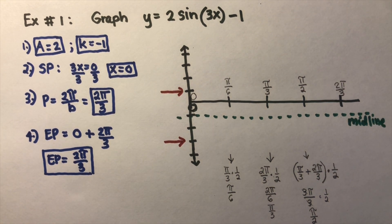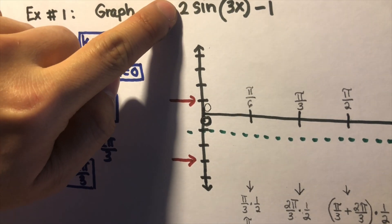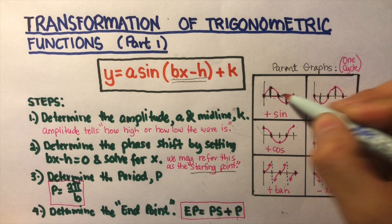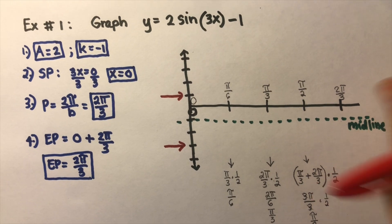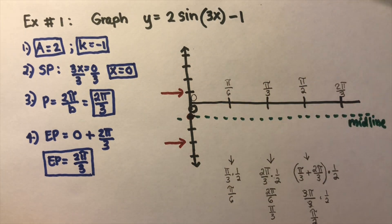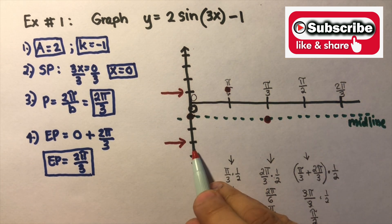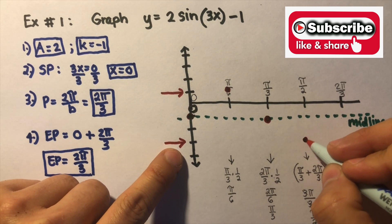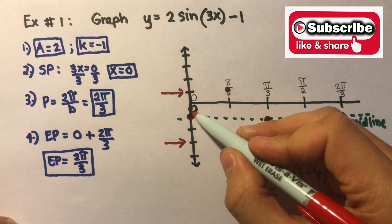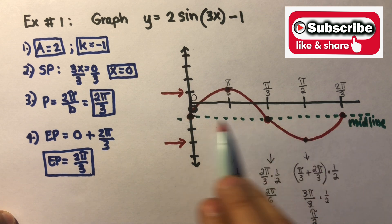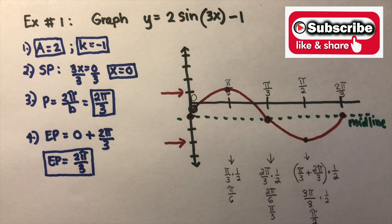Now we are ready to sketch the graph. Since this is a positive sine function, we use the positive sine shape. There are five dots. The first dot is on the midline, the second dot is at the top (amplitude marker), the third dot is back on the midline, the fourth dot is at the bottom (lower amplitude marker), and the fifth dot is back on the midline. Connecting them gives us the sine curve. If you think this video is helpful, please like and subscribe for more math videos. See ya.